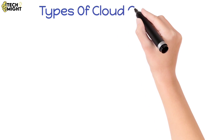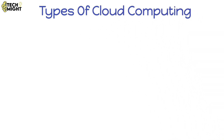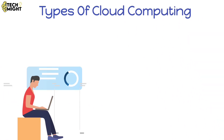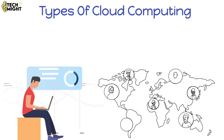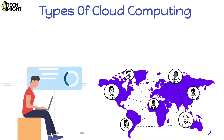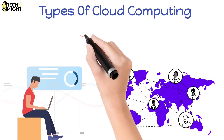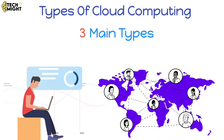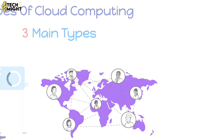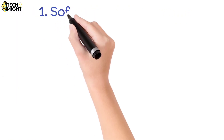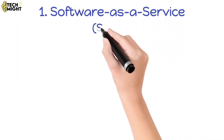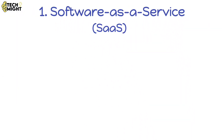Types of cloud computing. Cloud computing isn't just a single piece of technology, it's a whole ecosystem with different flavors. There are three main types you should know about. First up, we have Software as a Service, SaaS.